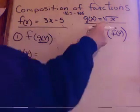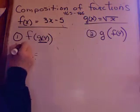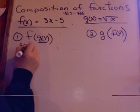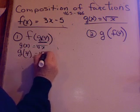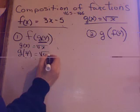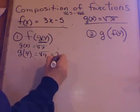So, g of x equals root x. g of 4 equals root 4. And now, figure that out. Root 4 is 2.